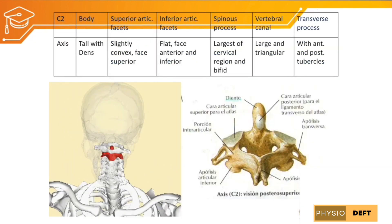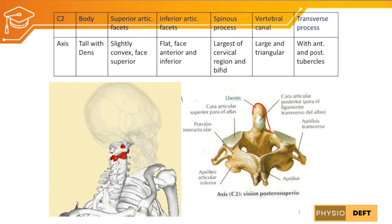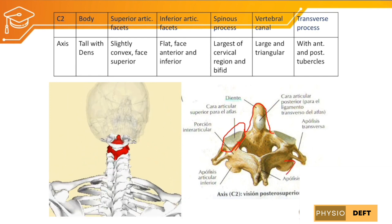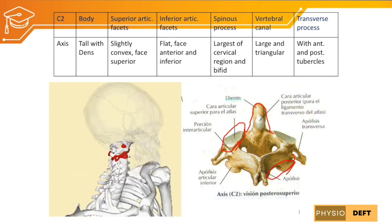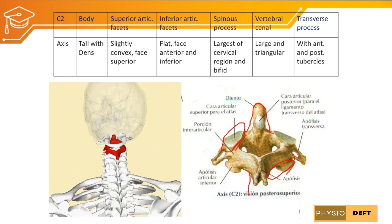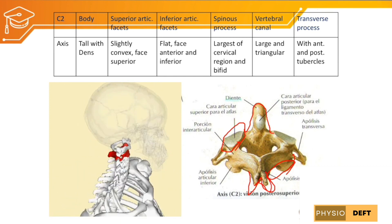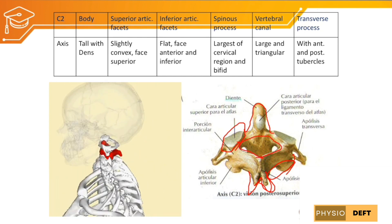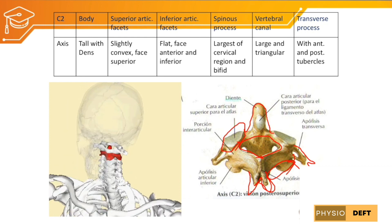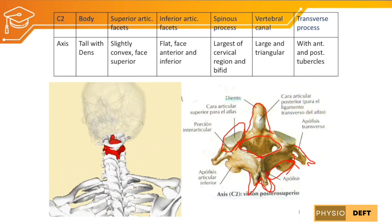The second atypical vertebra is C2, the axis. The body of the axis is tall and is called the dens. The superior articulating facet is convex and faces superiorly. The inferior articulating facet is flat, facing anteriorly and inferiorly. The spinous process of the axis is the largest in the cervical region and is thick and bifid. The vertebral canal is large and triangular. The transverse process has anterior and posterior tubercles, but the main distinguishing feature is the presence of the dens, which no other vertebra has.